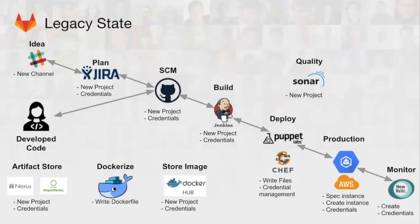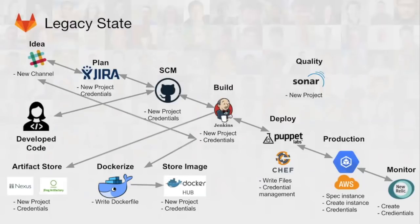Maybe we include those configuration files in source control, maybe we don't — it depends on our processes. For production, we're going to have to stand up a new instance, spec it in AWS or Kubernetes, create that instance, make sure credentials are all wired back, and then create a new project in New Relic to monitor that production instance.